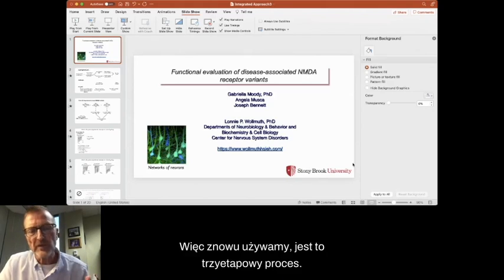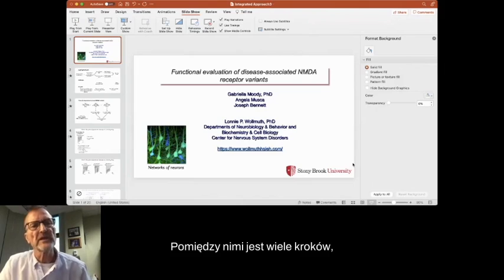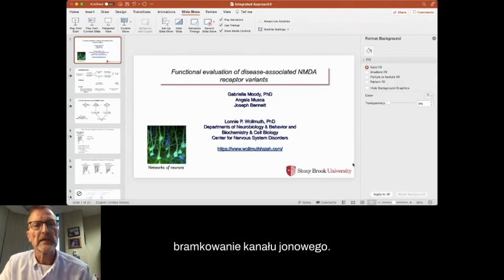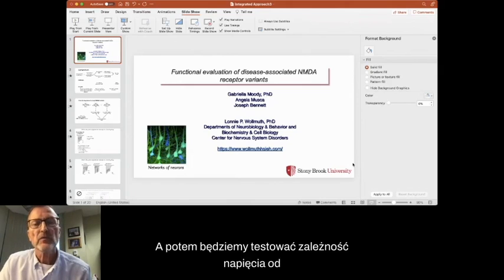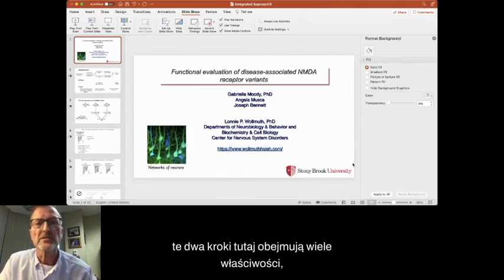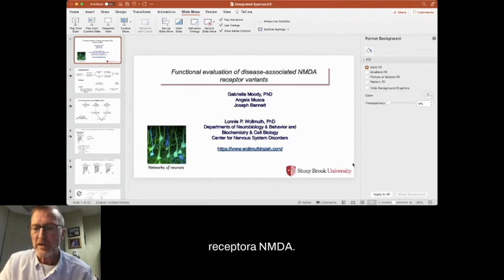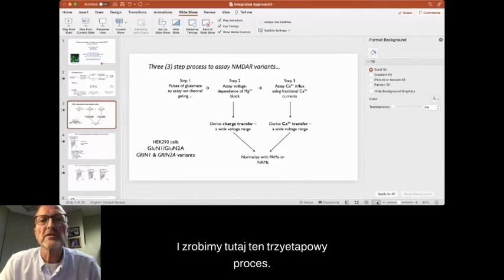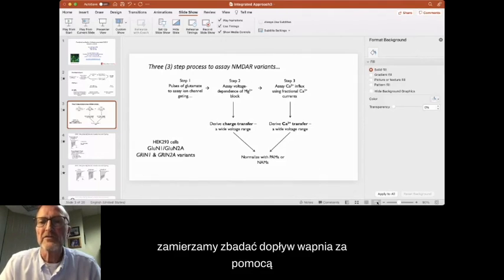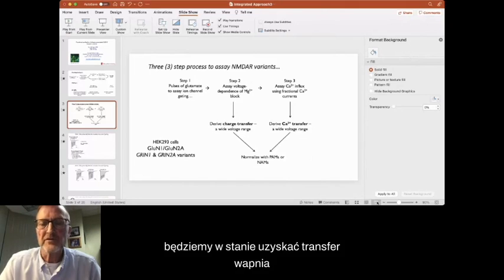So again, we're using it's a three-step process. There's lots of steps in between. We're going to use pulses of glutamate to assay ion channel gating. And I'll discuss this in a moment. And then we're going to assay voltage dependence of magnesium block. So again, these two steps here encompass a lot of properties of the NMDA receptor. And we're going to do this three-step process here. And from these combination factors, we're going to derive a charge transfer. The step three, we're going to assay calcium influx, and then from that, we're going to be able to derive a calcium transfer.